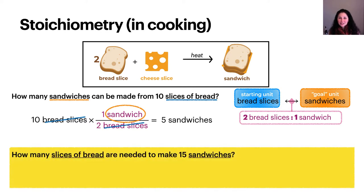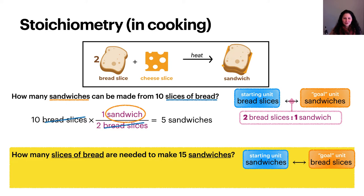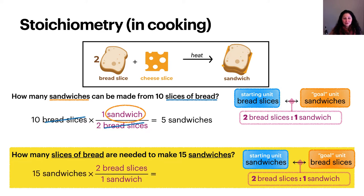Now you try. Practice what you just learned by answering this question: how many slices of bread are needed to make 15 sandwiches? Please practice writing out the solution using dimensional analysis. This time we are starting with the unit of 15 sandwiches and our goal unit is slices of bread. We use the same conversion factor — the stoichiometric relationship of two bread slices to one sandwich — writing it so the unit sandwiches cancels, and we are left with our goal unit bread slices. The calculation tells us that we need 30 bread slices to make 15 sandwiches.